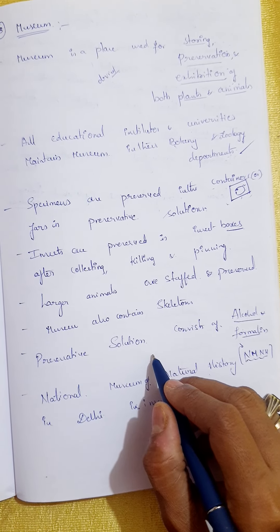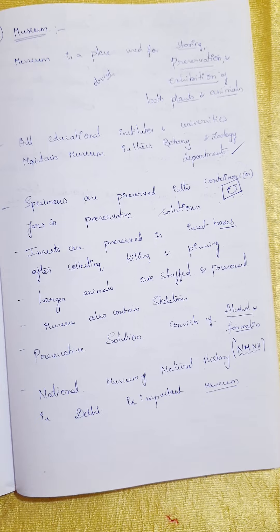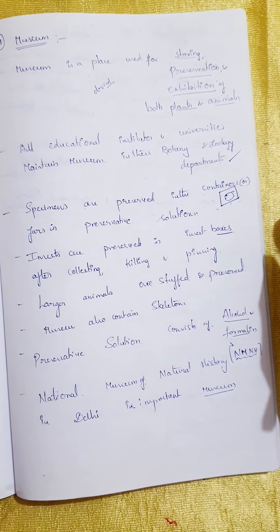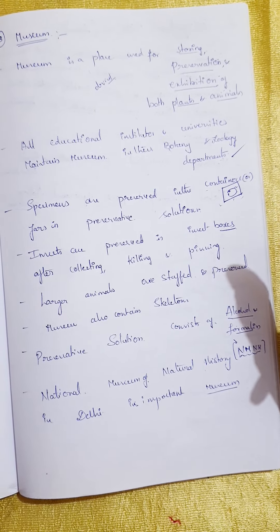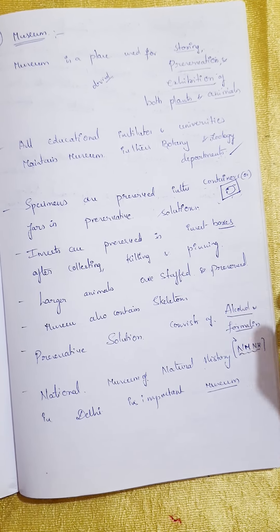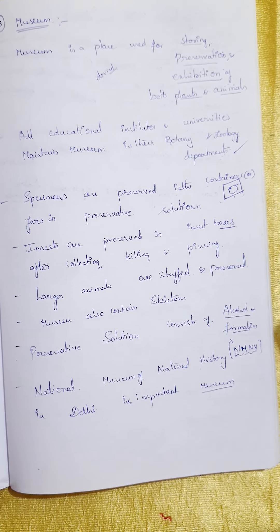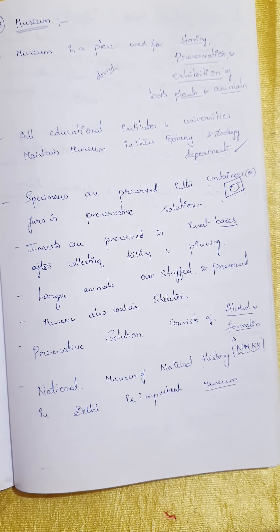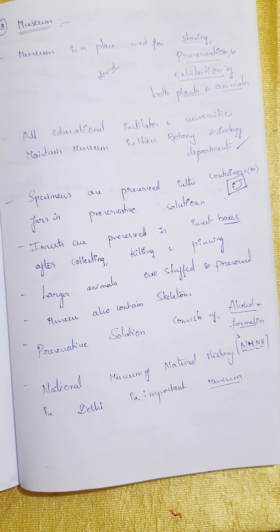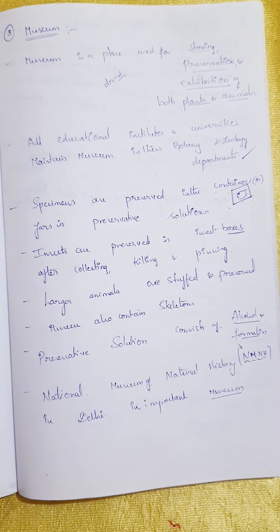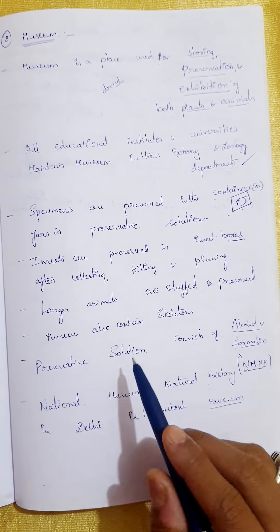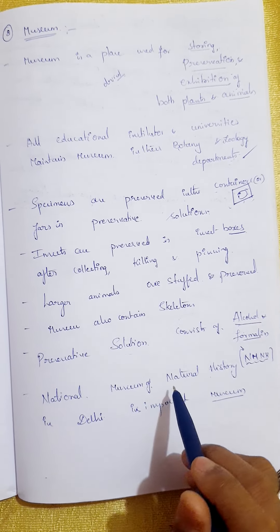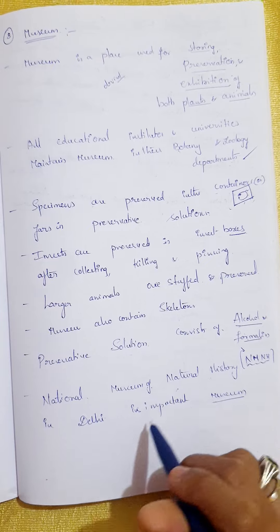Larger animals are stuffed and preserved. The internal body organs are removed, and only the skin or bones are kept. Stuffing material is filled inside the skin — similar to how a teddy bear is made — and this process is called stuffing. Museums also contain skeletons and specimens in preservative solutions.